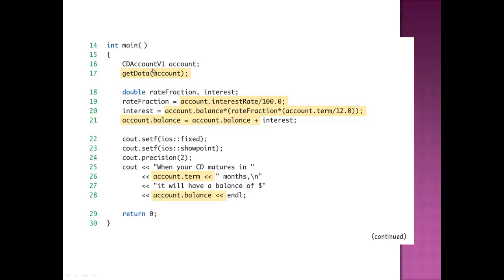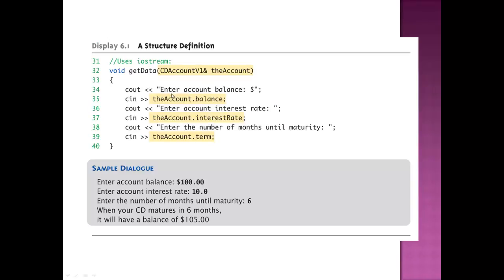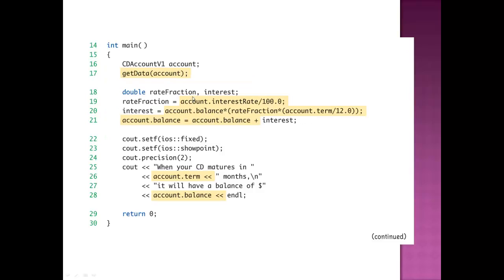Moving on into main — I create a variable for that structure, so CDAccountV1 is now called 'account.' Then I call get_data using variables from account. There's a formula for calculating the interest rate and account balance, and then three lines to format the code with two spaces to the right of the decimal point. It will say 'when your CD matures, you're going to have this kind of balance.' Then it calls the function, calculates the stuff, and presents it on screen. The function asks you to enter how much you deposited, what the interest rate is, and how long it is — then uses those three amounts to calculate and display the result.